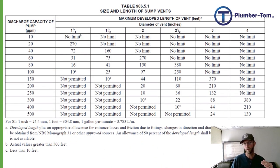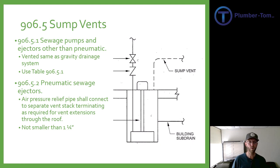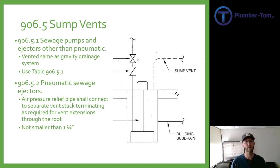Once we know our gallons per minute and our developed length, we come up to the top of the table to find our vent size. Section 906.5.2 covers pneumatic sewage ejectors and states that the air pressure relief pipe shall connect to a separate vent stack terminating as required for vent extensions through the roof. Most of the ones we deal with are electric, so that would not as much apply. Pneumatic ejectors also have a minimum pipe size of one and a quarter inch. Sumps just will not work if air is not able to replace the fluid being pumped out — they have to have vents. I made the mistake of failing to install one once, and trust me, it doesn't pump when there's no airflow.